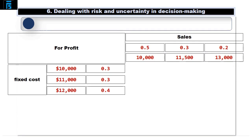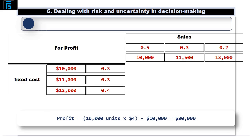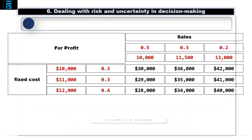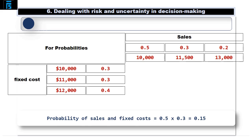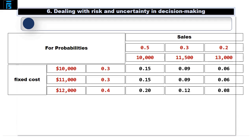Firstly, the profit table. We populate it with the profit that will result from every given level of sales demand and fixed cost. For example, in the top left-hand corner, sales is 10,000 units and fixed cost is $10,000, so profit is 10,000 units times $4 contribution minus $10,000 cost, which equals $30,000. A similar approach for the other boxes completes the table. Now the second table for probabilities: we work out the joint probabilities. In the top left-hand corner, the probability of sales being 10,000 units and fixed costs being $10,000 is 0.5 multiplied by 0.3, which equals 0.15. A similar approach for the other boxes gives us the full probability table.